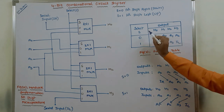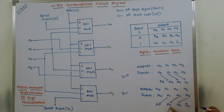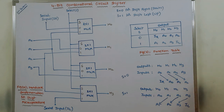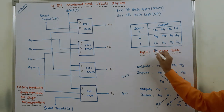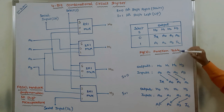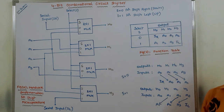When S equals 1, at H0 we write A1, at H1 we write A2, at H2 we write A3, and at H3 we write IL. So IL is connected to the H3 output, A3 is connected to H2 output, A2 is connected to H1 output, and A1 is connected to H0 output when S is equal to 1. When S is equal to 0, A2 is connected to H3, A1 is connected to H2, A0 is connected to H1, and IR is connected to H0.